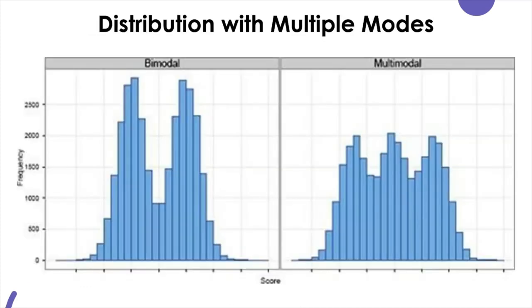Depending upon the number of outstanding peaks in a histogram, a distribution may be called bimodal, when there are two peaks like this, or a distribution is called multimodal, when there are more than two distinct peaks, like in this case.